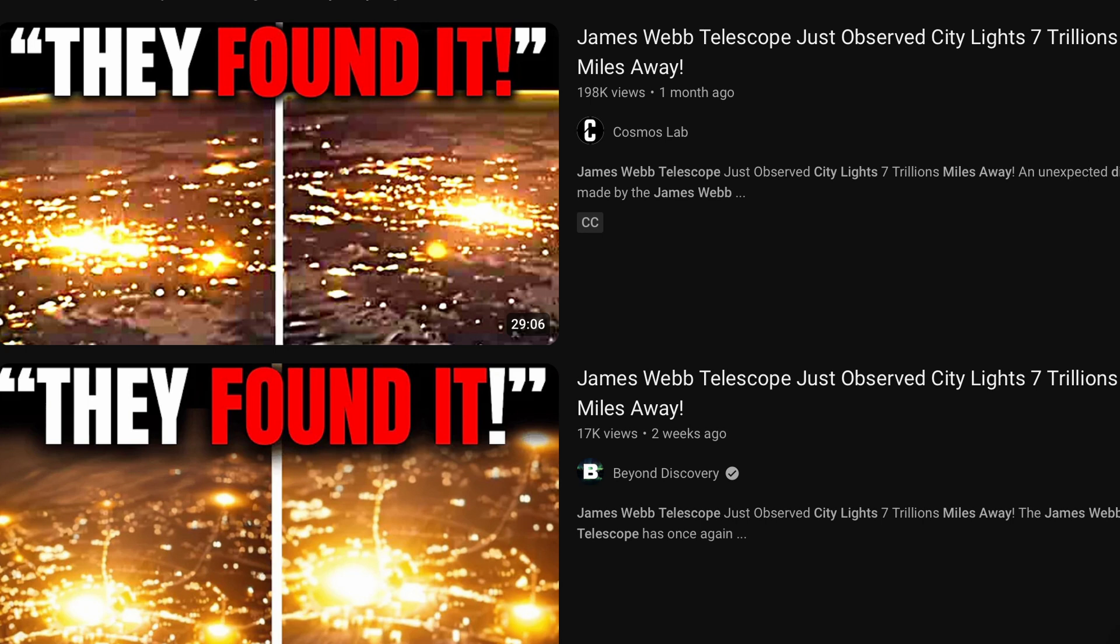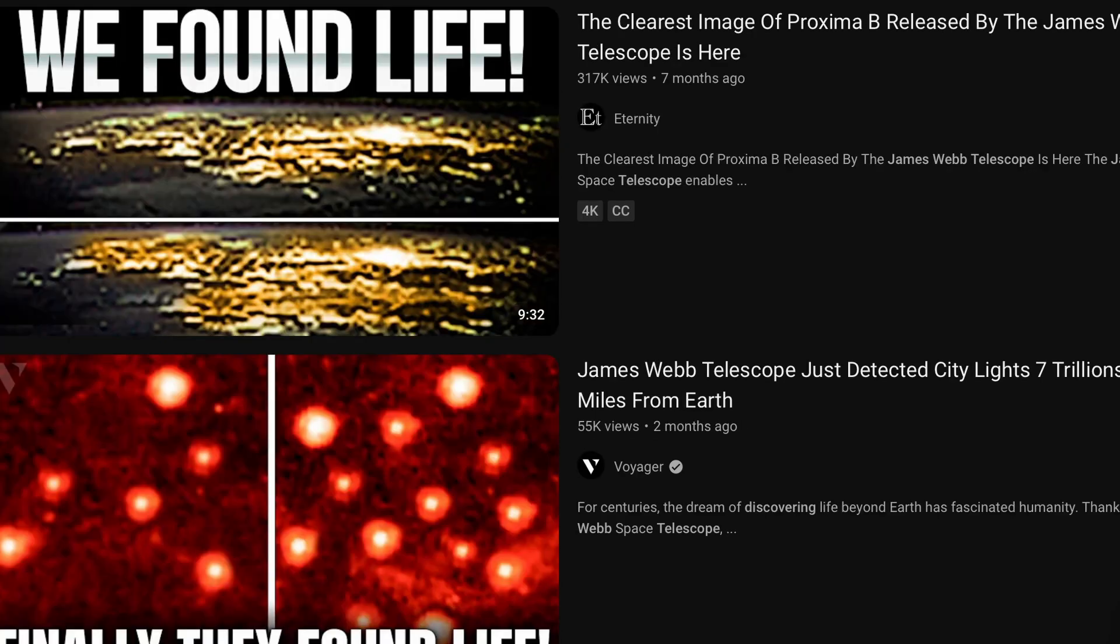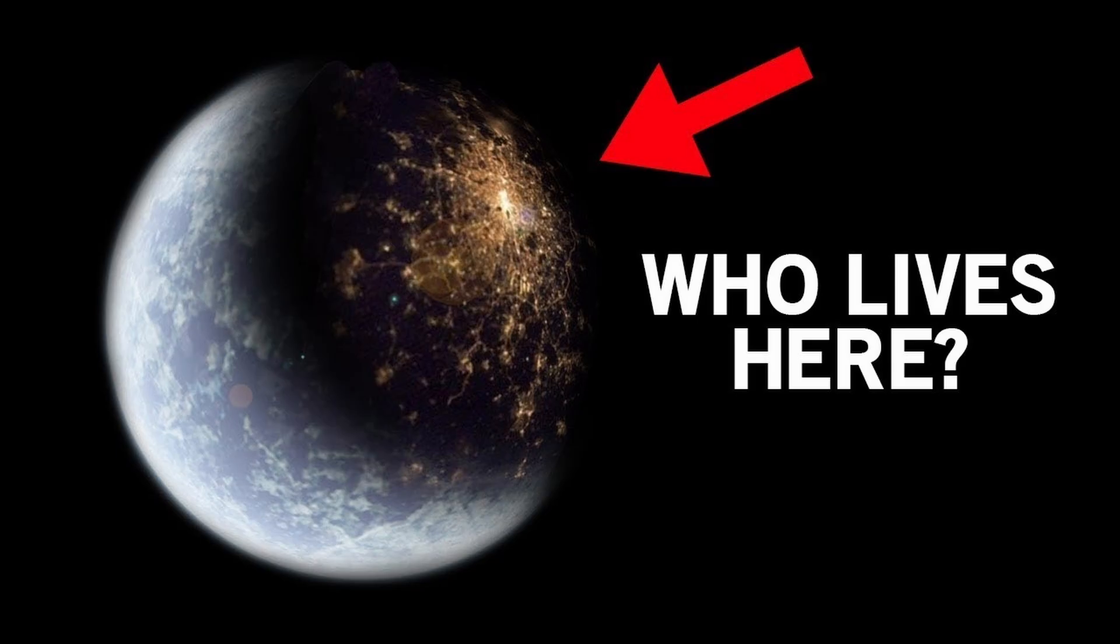The claim. Various sources, particularly from social media, YouTube channels, and some lesser-known websites, have propagated the idea that JWST has detected artificial city lights from planets billions or trillions of miles away. These sources suggest that the telescope's powerful infrared capabilities have enabled it to capture faint glows indicative of city lights, hinting at the presence of advanced extraterrestrial civilizations.